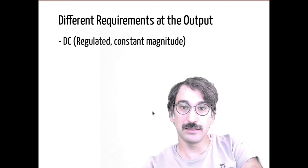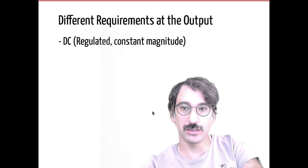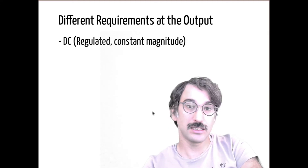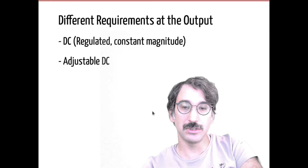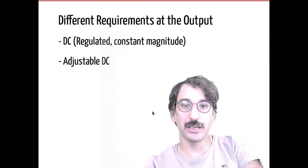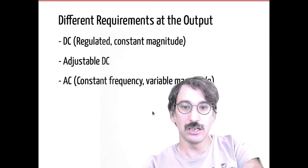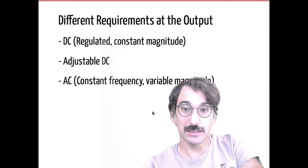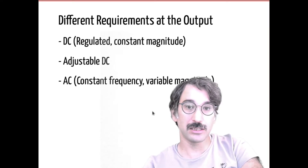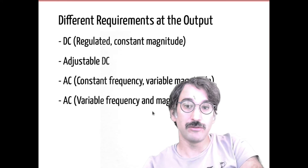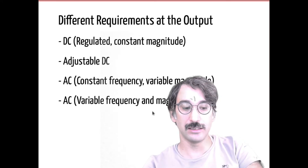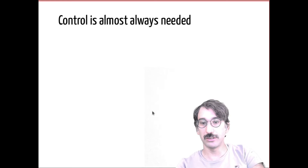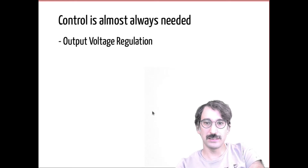You can also have different requirements at the output. For example, you can require a constant DC voltage like a USB charger, constant at 5 volts. You can require an adjustable DC, maybe from a power supply, or you can require constant frequency variable magnitude AC, or variable frequency and magnitude AC like a three-phase motor drive.